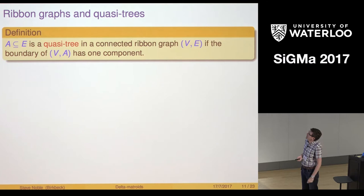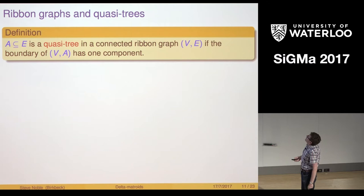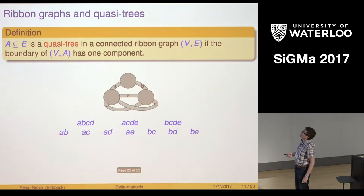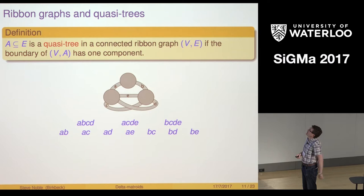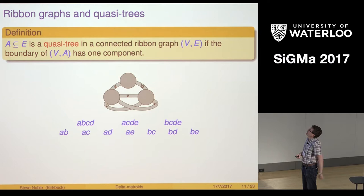The key objects in graphs when we think about Matroids are the spanning trees. In Delta Matroids they are the quasi trees, and those are spanning sub graphs where the boundary has only one component. Let me show you with an example what I mean. Here's a ribbon graph and here is its Delta Matroid. If I take for instance just AB, the three vertices together with AB would be a spanning tree. If I trace around this, I walk around the edge of the sub graph that I've got and I've walked around the whole of the edge of the sub graph in one go.